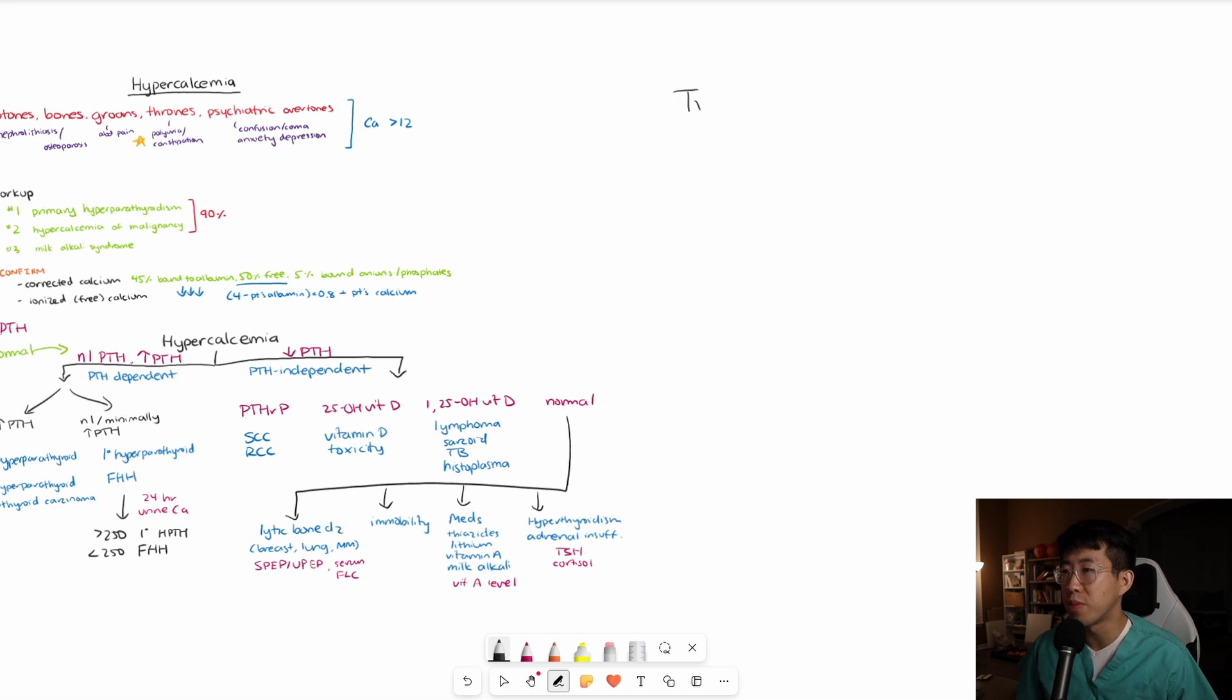Now let's move on to treatment. When we're talking about treatment, first we want to see the degree of hypercalcemia. If their hypercalcemia is less than 12, this is considered mild and most patients are asymptomatic at this range, so they're not going to require treatment. From 12 to 14, we consider this moderate. Immediate treatment is not really needed unless they're having symptoms.